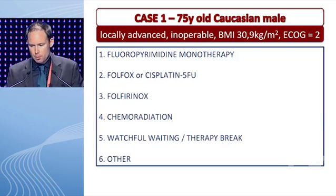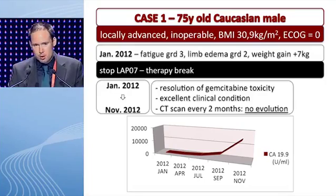Would you change therapy to another monotherapy like a fluoropyrimidine-based therapy? Or switch to a combination of platinum with 5-FU? Or intensify therapy by giving FOLFIRINOX? Or since he hasn't progressed after four months of chemotherapy, would you consider him a good candidate for chemoradiation? Or would you withdraw chemotherapy, starting a therapy break and a period of close observation? Chemoradiation seems to be the most popular choice.